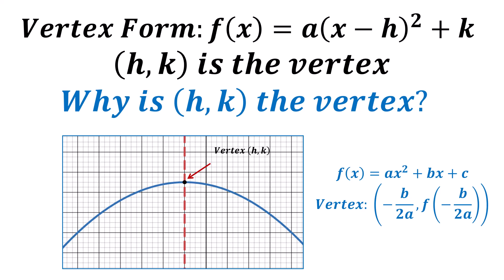The vertex form of a quadratic function is f(x) = a times the square of (x minus h) plus k, where the vertex is the ordered pair (h, k). But why is (h, k) the vertex when the quadratic function is in this form? If you've ever wondered, this is a lesson for you.